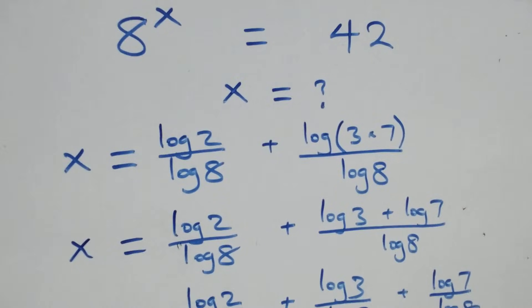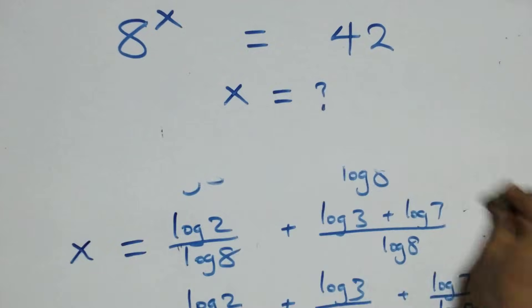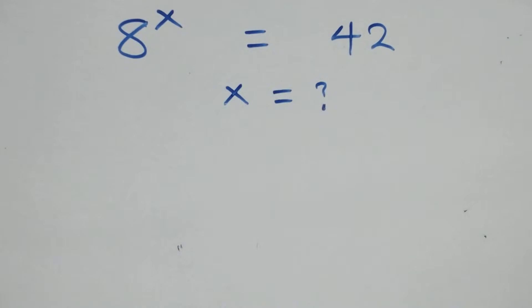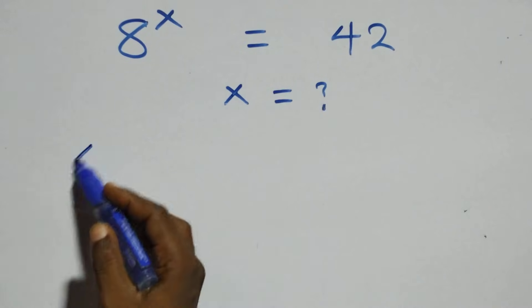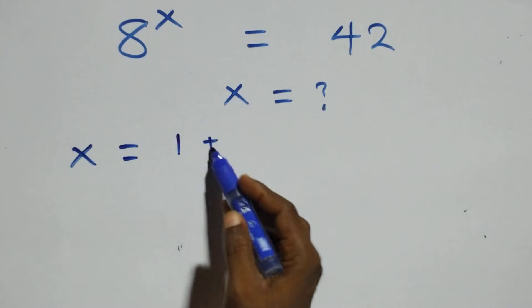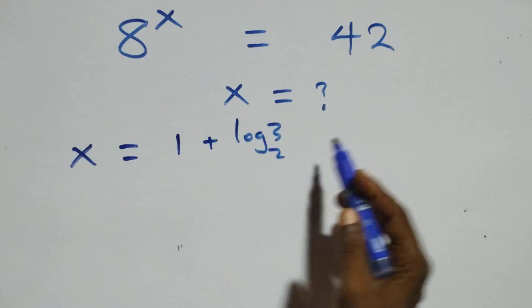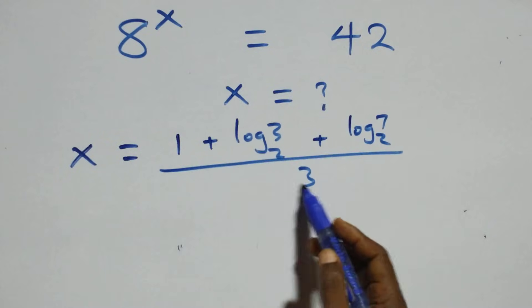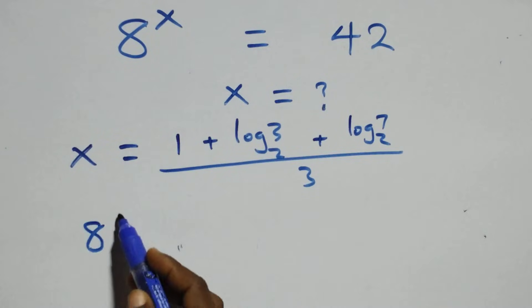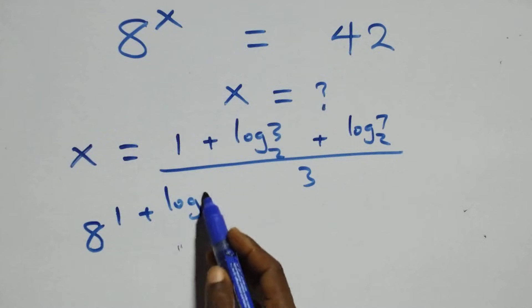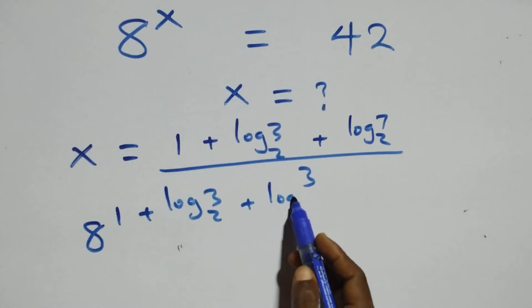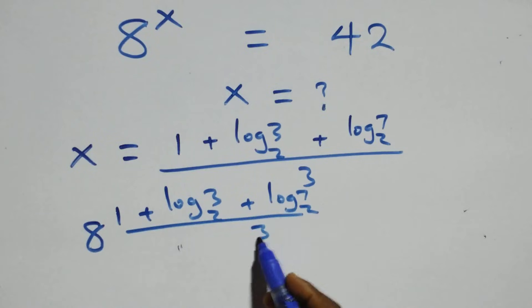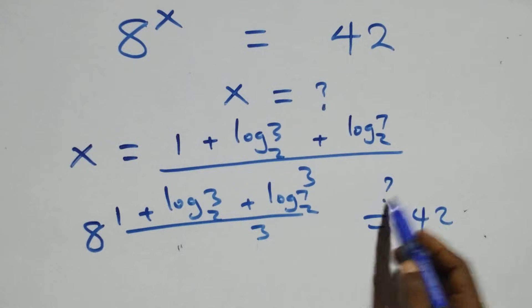We substitute the value of x, which is 1 plus log 3 base 2 plus log 7 base 2, all over 3. Substituting: 8 raised to power of that expression equals 42 on this side.